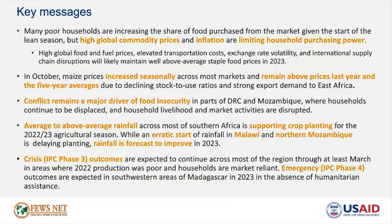In October, maize prices have been increasing seasonally across most markets and remain above prices last year and the five-year average, due to declining stock-to-use ratios and strong export demand to East Africa. Conflict also remains a major driver of acute food insecurity in parts of DRC and Mozambique, where households continue to be displaced and livelihood and market activities are disrupted. Across most of southern Africa, average to above average rainfall is supporting crop planting; however, an erratic start of rainfall in Malawi and northern Mozambique is likely delaying planting. Overall, crisis IPC phase 3 outcomes are expected across most of the region until at least March, with emergency IPC phase 4 outcomes expected in southwestern Madagascar in 2023 in the absence of humanitarian assistance.